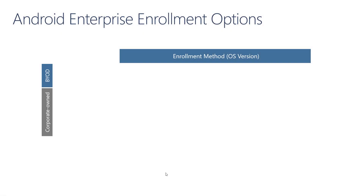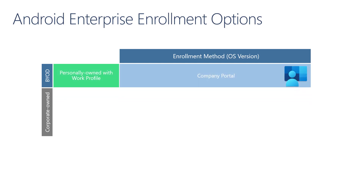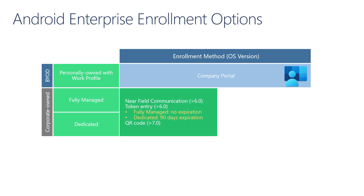Here are the different ways that you can enroll Android devices into Intune using Android enterprise. For personal devices enrolled using the personally owned with work profile enrollment option, the Company Portal is really the only way to get those devices into mobile device management. Corporate-owned device scenarios such as fully managed and dedicated devices can use NFC — near-field communication — or token entry for Android devices with OS version 6.0 and above.